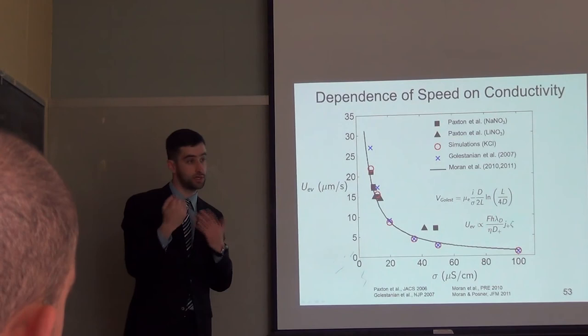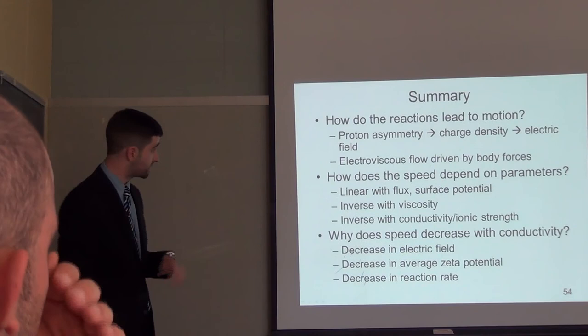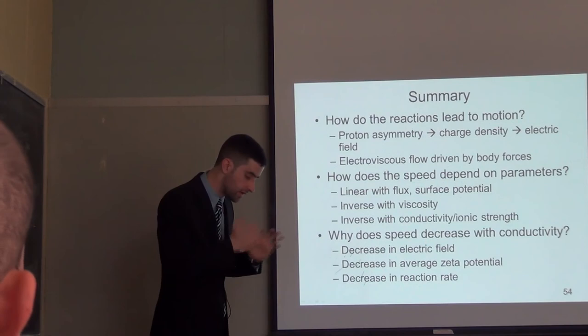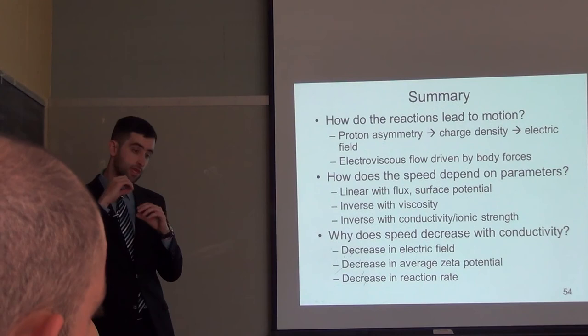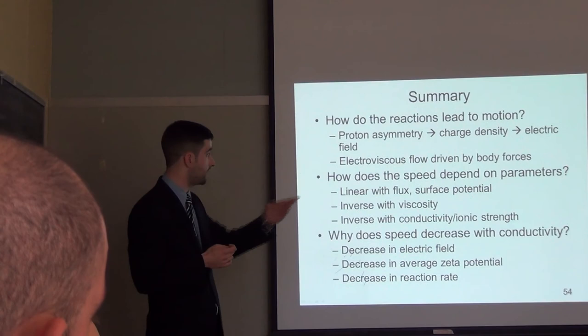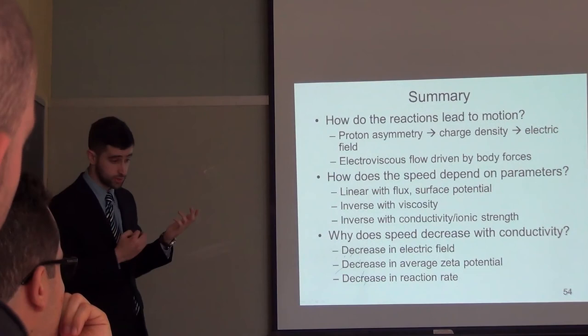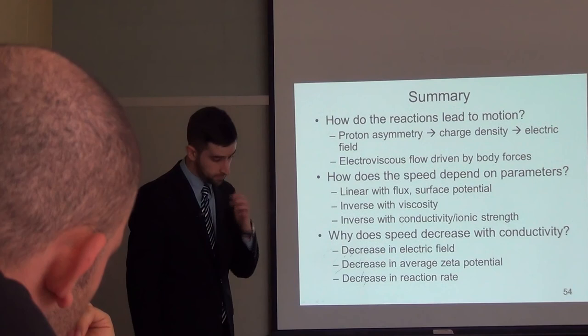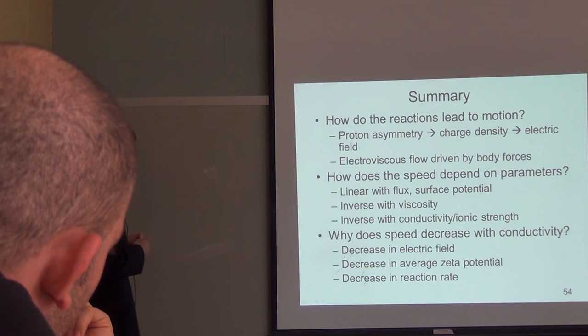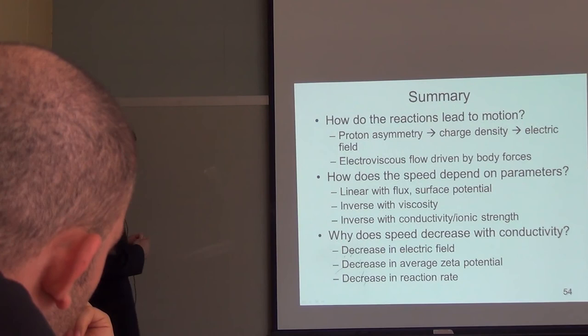Just a quick summary going back to the main questions. How do the reactions lead to motion? The reactions lead to an asymmetric concentration distribution of protons, creating a dipolar charge density distribution that generates an electric field. If the rod is charged, it generates an electroviscous flow that propels the rod, driven by body forces. How does the speed depend on parameters? It's linear with flux and surface potential for a charged rod, and inverse with viscosity and either conductivity or ionic strength. The three primary reasons rod speed decreases with conductivity are the decrease in electric field (because the solution is more conductive), decrease in average zeta potential, and decrease in the reaction rate — these seem to be inherent limitations to this mechanism.